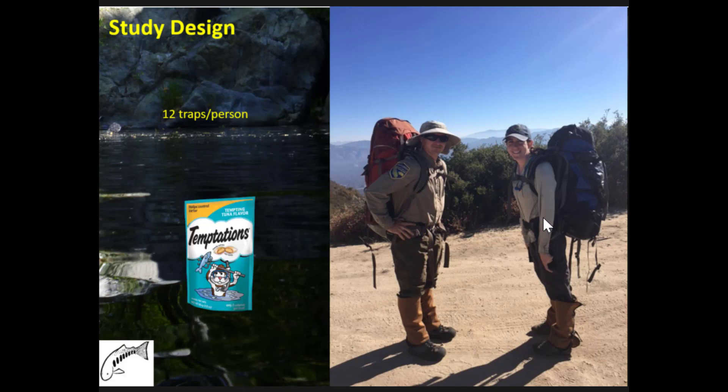We used Temptations cat food as bait—pure luck that we grabbed some bags from the 99 cent store and never tried another cat food after that. This one worked really well. In a preliminary study when collecting genetic samples, we threw out some traps and ended up catching over 30 bullhead in about five traps. That made us realize we had a problem, but also that we had an effective method for removing these fish.